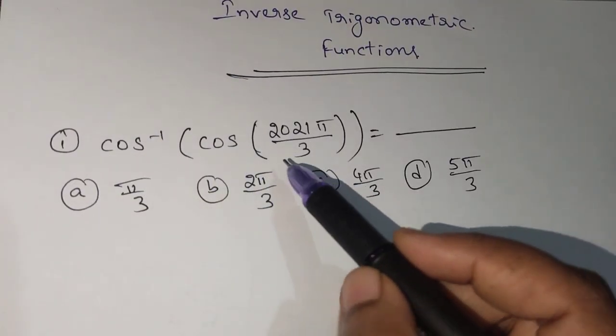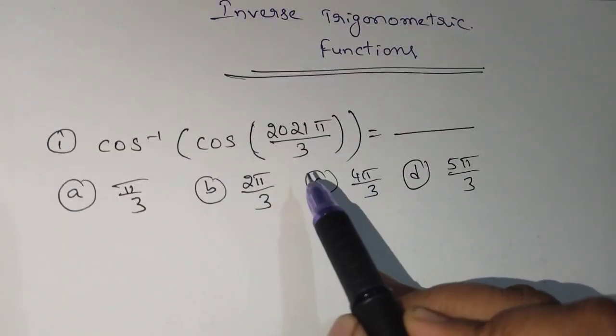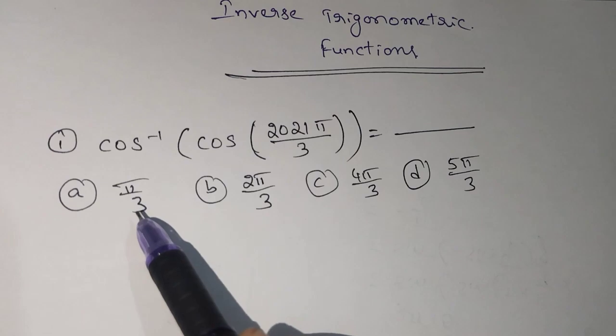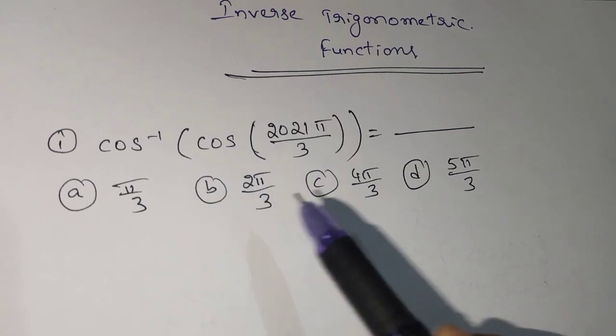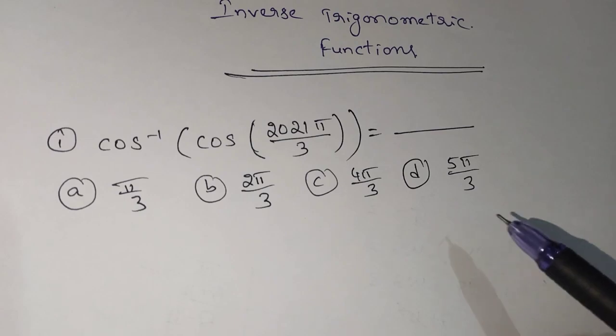cos inverse of cos of 2021π divided by 3. What is the value of this one? They gave the options: π/3, 2π/3, 4π/3, 5π/3. So let's see which option is correct.